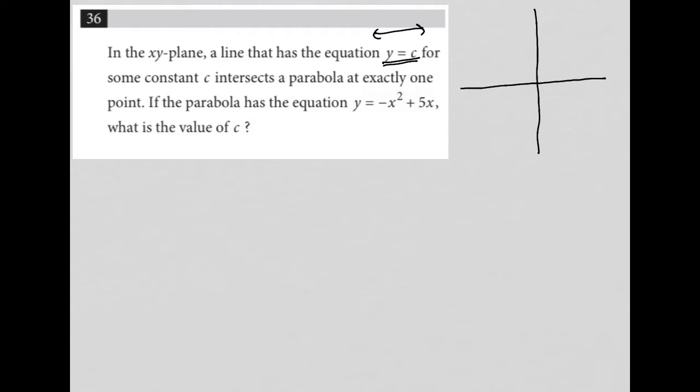So the line that has the equation y equals c for some constant c intersects a parabola at exactly one point. Let's think about that. A parabola looks like this. How is it possible that a horizontal line intersects it at only one point? The only way that that's possible is if that horizontal line intersects the vertex. If it intersects right on the actual vertex of the parabola. So let's keep that in mind.